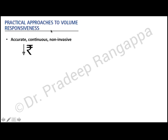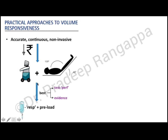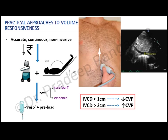For practical fluid responsiveness assessment, the measure used should be accurate, continuous, non-invasive, and low cost. In resource-limited settings, if you have an ultrasound or echo machine — which most second-tier hospitals with an ICU should have — combining ultrasound with passive leg raising has the best test performance and complies with current evidence for identifying fluid responsiveness.